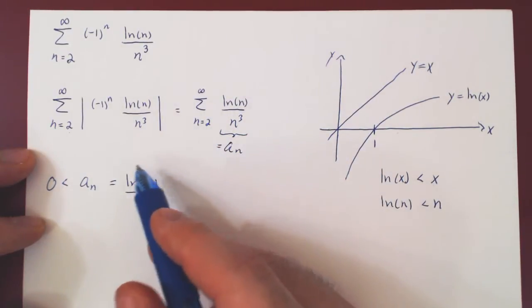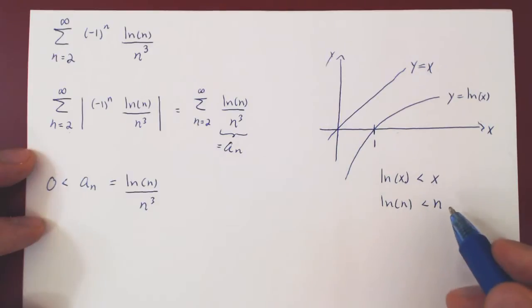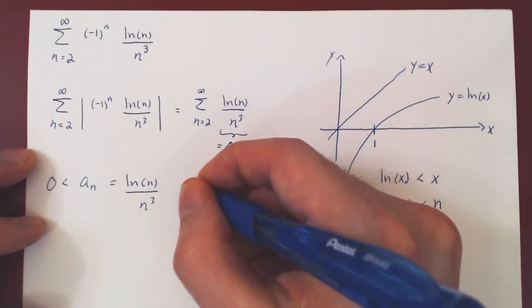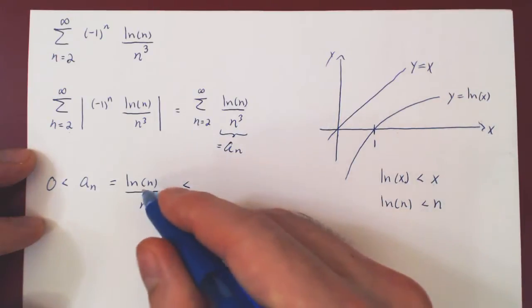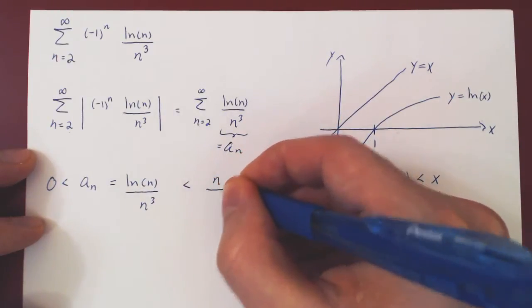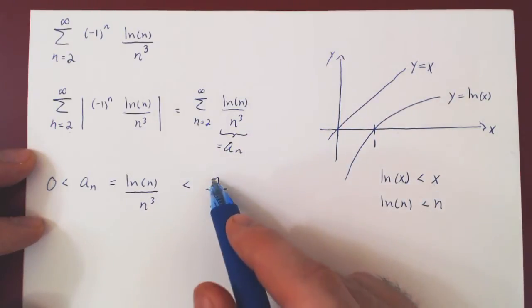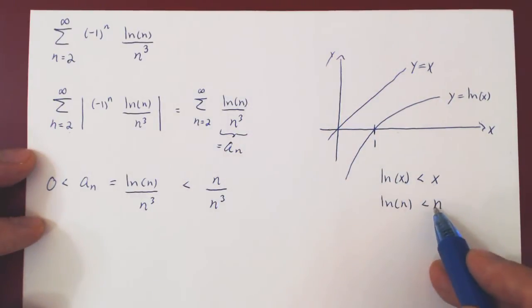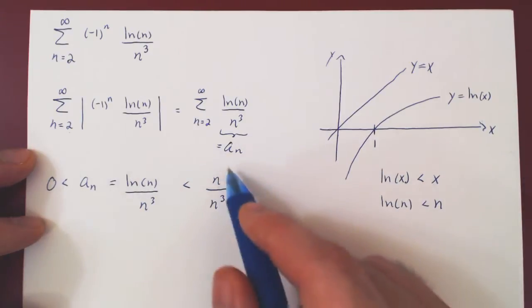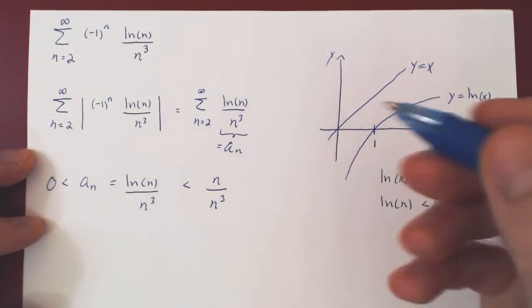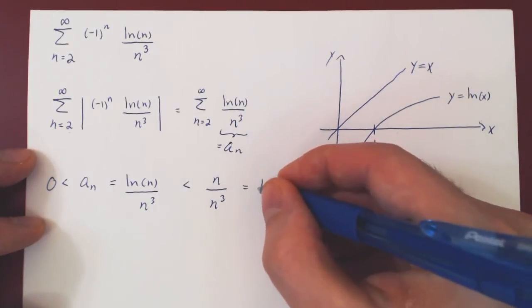But, if I replace now ln of n by n, I make my numerator larger, so the entire fraction becomes larger than the initial fraction. I kept the same denominator, but I've picked now a new, larger numerator, so the whole fraction is now larger than the original one. But, of course, n over n cubed is quite simply 1 over n squared.